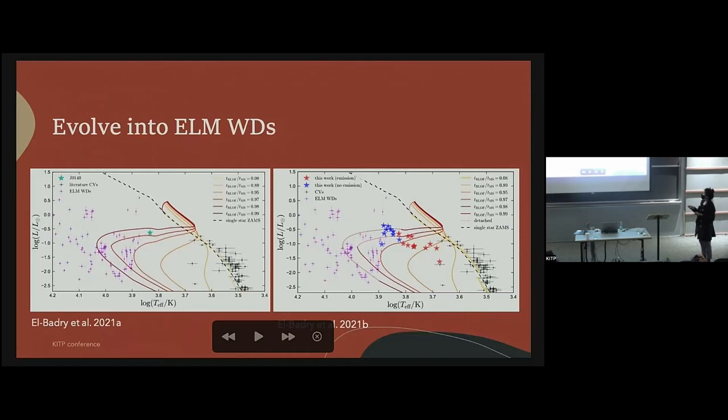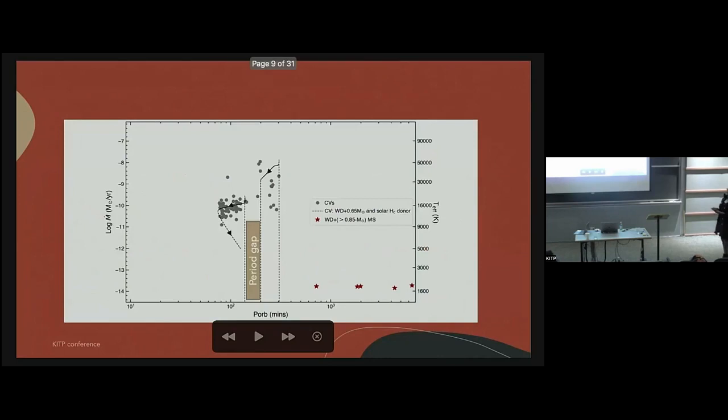In the HR diagram you can see where the systems are. This was a very interesting one because it is evolved, but if you do binary simulations then you can tell that this will go to the region where we find extreme low mass white dwarfs. That motivated a larger search for other systems. What happens is that they are accreting and at some point they detach, they look like extremely low mass white dwarfs, and then they can evolve into AM CVn stars.